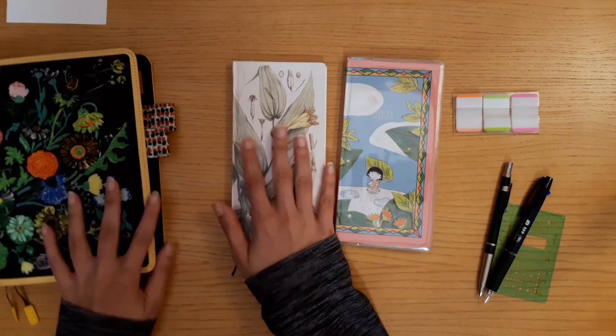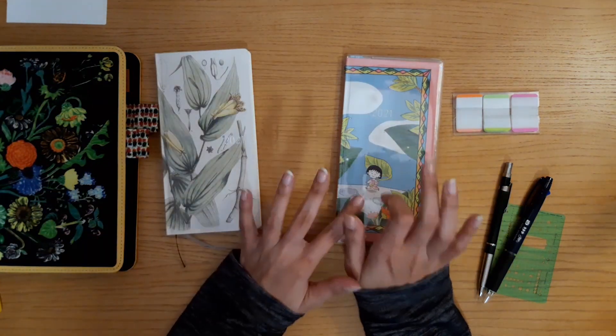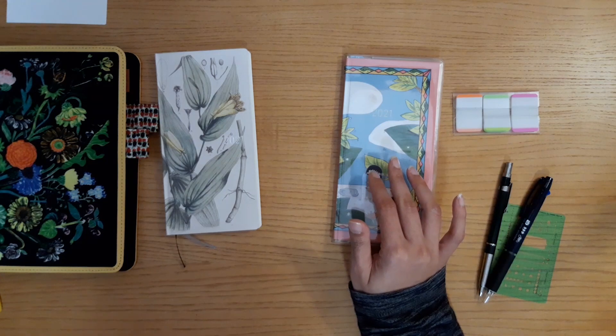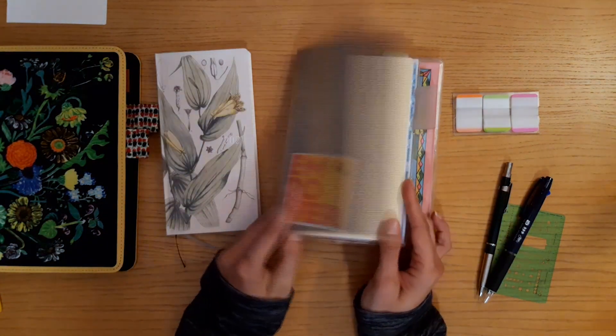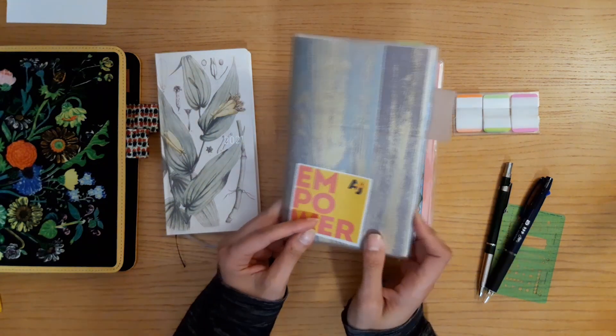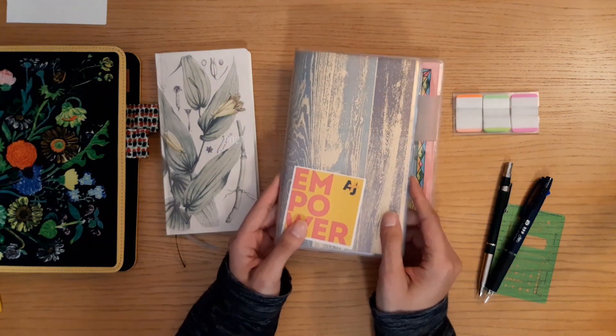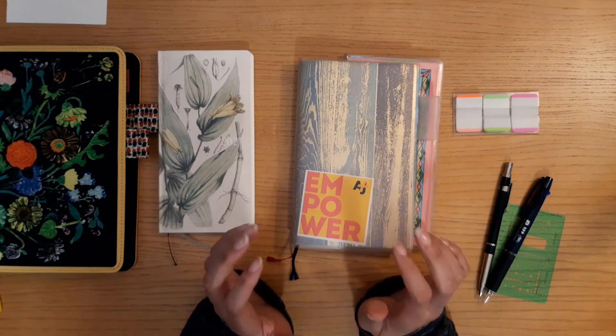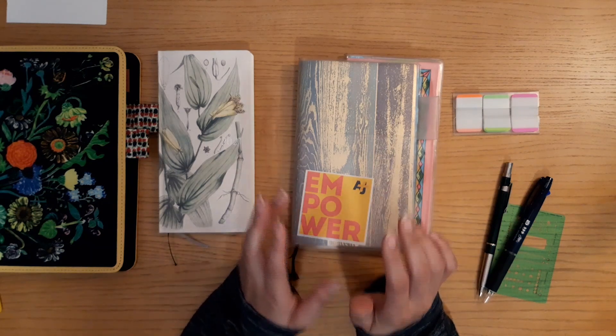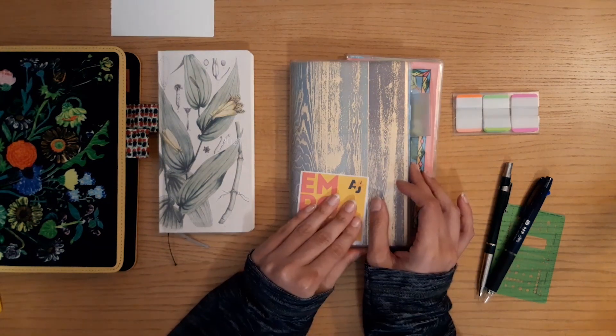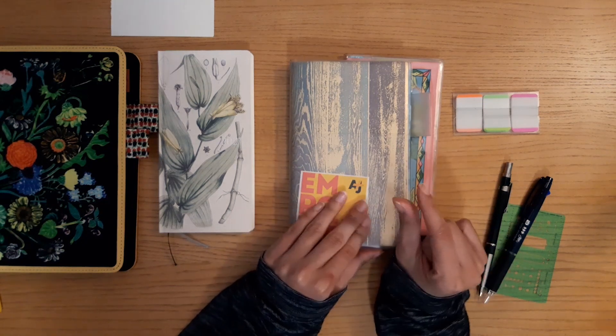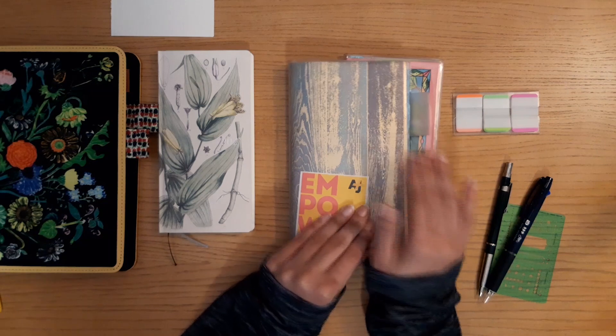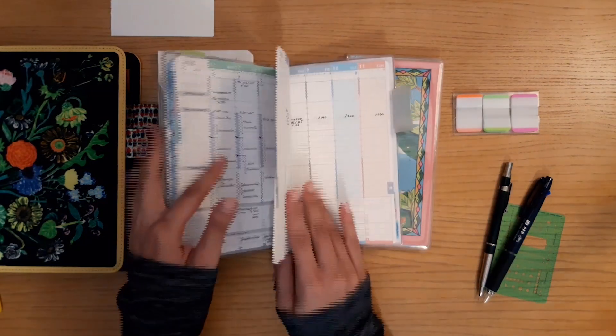This one is kind of taking over my Jibun Techo. The Jibun Techo was kind of an experiment. I wanted to see what it was like to use it. This is the B6, and I was actually this close to getting the Light version because I really love it. This is a beautiful, fun planner that inspires me.